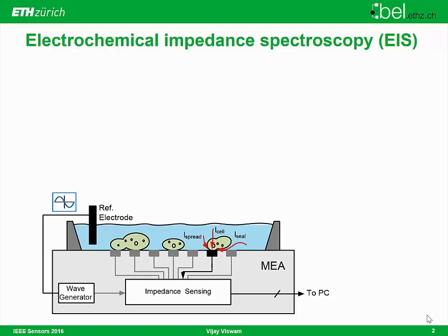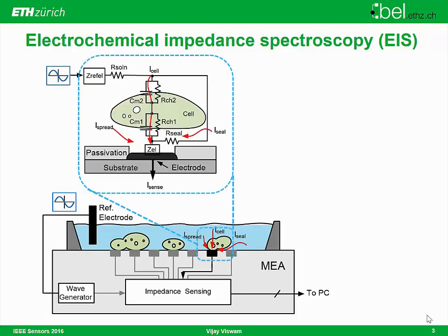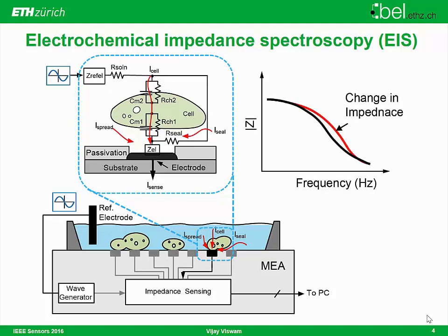This can be modeled using resistors and capacitors in series — representing the electrolyte, the cell, and the electrode interface. The change in this impedance when a cell is sitting on top of the electrode depends on the position, the size, or the attachment of the cell, which you can observe in the impedance spectrum.